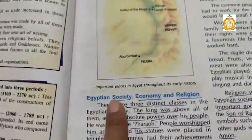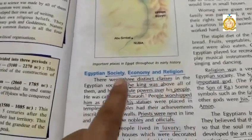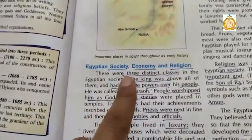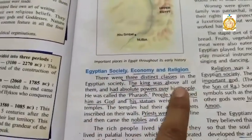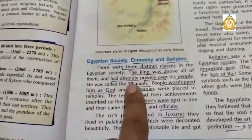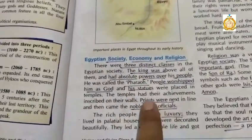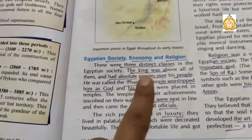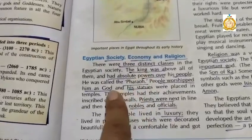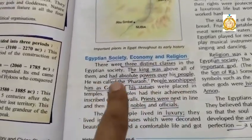The next topic is Egyptian society, economy and religion. Like the Indus and Mesopotamian civilization, Egyptian society was also divided into three main classes. The first class included the king, nobles, officials and priests, and they lived a luxurious life. The king was considered as a god, his statue was placed in the temple, and he was called Pharaoh.